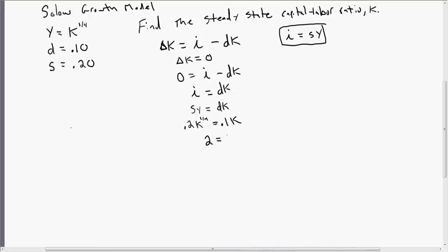Dividing through by 0.1, and then dividing through by K to the 1 fourth power, will leave us with this. To just solve for K, then, we've got to raise both sides to the power of four-thirds.